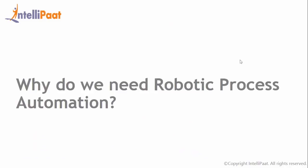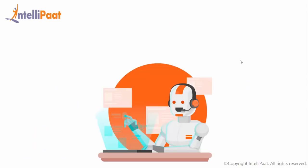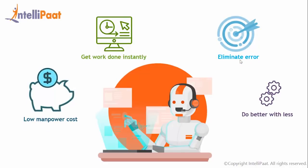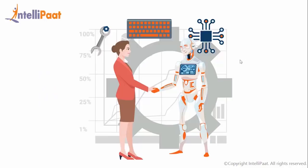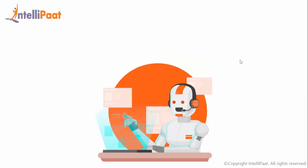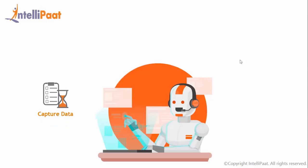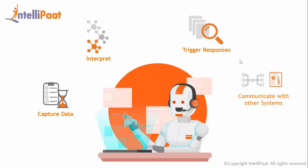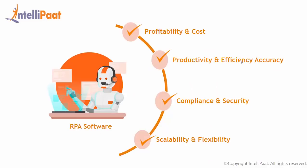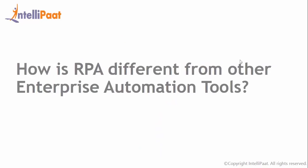Now we will look at why we need RPA. RPA can do almost any task that a knowledge worker does on a regular basis at a fraction of the cost and at a much faster rate and with almost zero error rate. RPA is the technology that successfully integrates the actions of a human interacting with digital systems to execute a business process. RPA robots utilize the interface to capture data and manipulate applications just like humans do. They interpret trigger responses and communicate with other systems to perform a vast variety of repetitive tasks. An RPA software robot never gets tired, makes zero mistakes and costs a lot less than an employee.